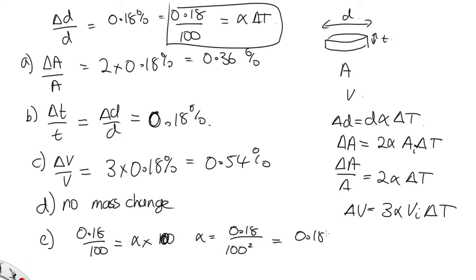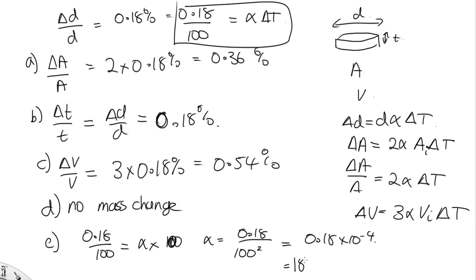which is 0.18 times 10 to the minus 4. We could also write this as 18 times 10 to the minus 6 if we wanted to. And we should give units, so this is per Kelvin, or per degree C—it doesn't matter.